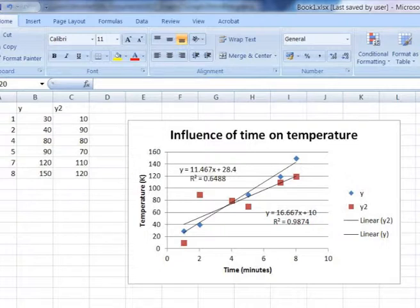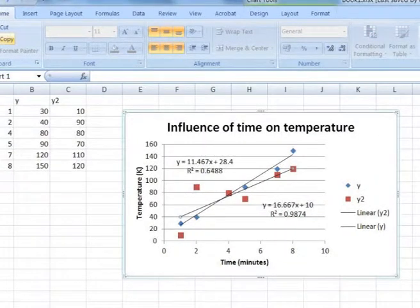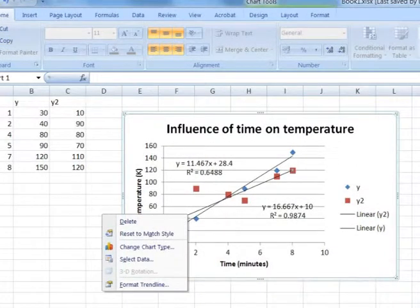Select the trendline you would like to modify by clicking with your mouse on it. Now you can see it has been selected. Right click on your mouse and you will see a pop-up showing various options and select Format Trendline.